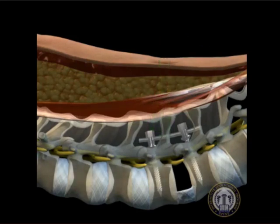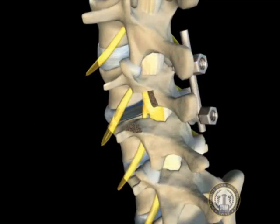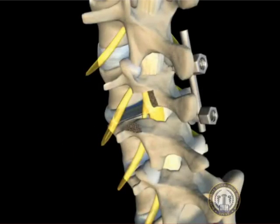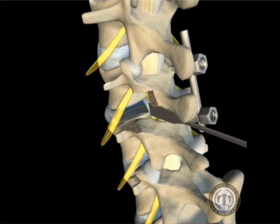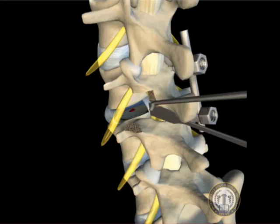Once the optimal interspace distraction has been achieved, end plate preparation is performed using a series of down-pushing curettes and end plate scrapers. A small retractor is used to protect the traversing nerve root, and the exiting nerve root may need to be slightly elevated if performing an L5 to S1 fusion. The cartilaginous end plates are then removed, the bony end plates are decorticated, but left structurally intact.